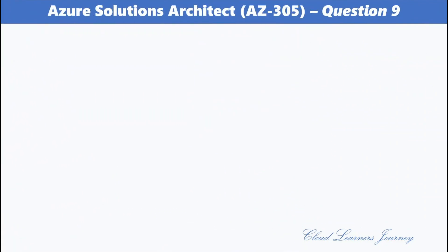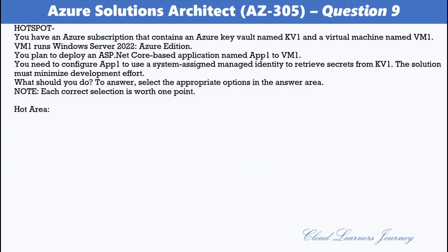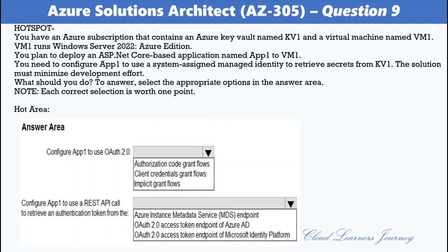Question 9. You have an Azure subscription containing an Azure Key Vault named KV1 and a virtual machine named VM1 running Windows Server 2022 Azure Edition. You plan to deploy an ASP.NET Core application named App1 to VM1. You need to configure App1 to use a system-assigned managed identity to retrieve secrets from KV1, minimizing development effort.